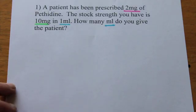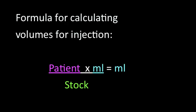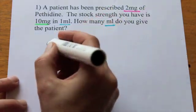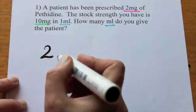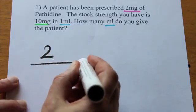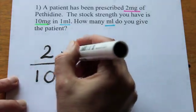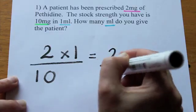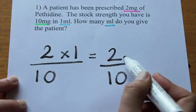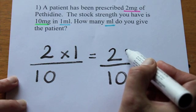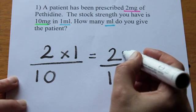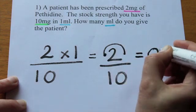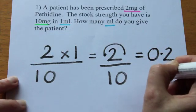Let's look at question number one. Remember, we need to use the formula. The patient has been prescribed 2mg, so the patient details come first. The stock strength we have is 10mg, and this is in 1ml. 2 times 1 equals 2, divided by 10. We can use the trick that dividing by 10 moves the decimal point back one place. Here it is in its starting position, and we go back one place. So my answer is 0.2ml.